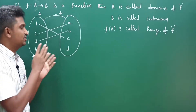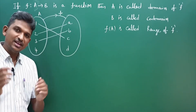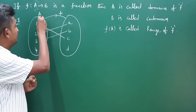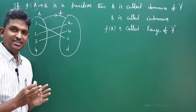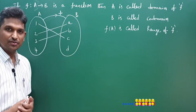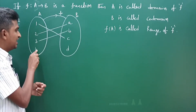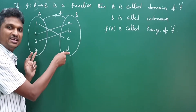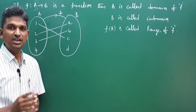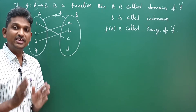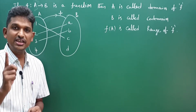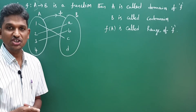Observe this example. Is this example a function? What is a function? For every element in set A, there exists only one element in set B — that is the definition of a function. Here, for the element 4, there doesn't exist any element. So is it a function? It is not a function. If it is not a function, there is no question of domain.